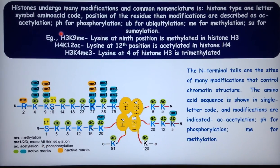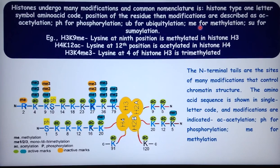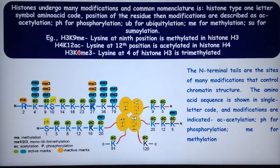The nomenclature for histone modifications uses: histone type, one-letter amino acid code, position of the residue, then the modification — AC for acetylation, PH for phosphorylation, UB for ubiquitylation, ME for methylation, and SU for sumoylation. For example, H3K9ME is histone H3 lysine at the ninth position which is methylated; H4K12AC is histone H4 lysine at the twelfth position which is acetylated; and H3K4ME3 means histone H3 lysine 4 is trimethylated.